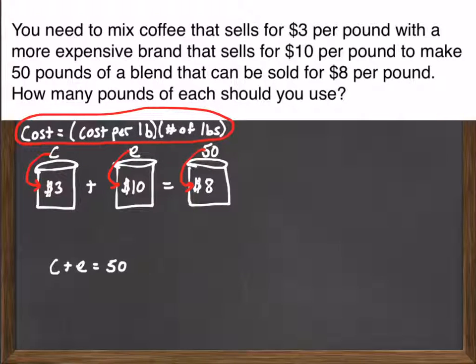And so we do that. C times 3, E times 10, and 50 times 8. So we get 3C, 10E, and 50 times 8. That leads us to our second equation for our mixture problem here. 3C plus 10E equals 400.